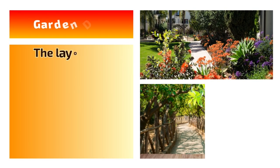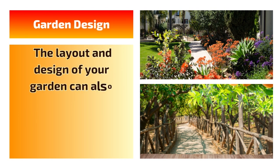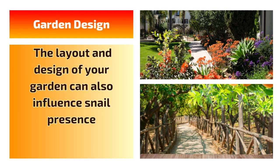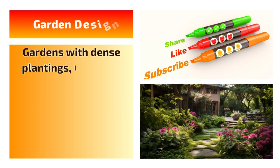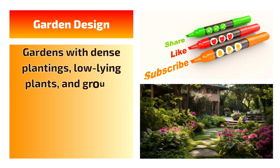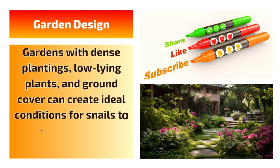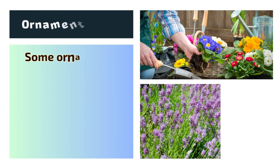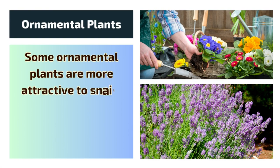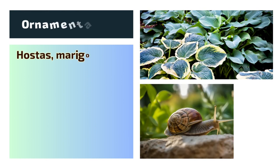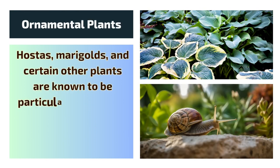6. Garden Design. The layout and design of your garden can also influence snail presence. Gardens with dense plantings, low-lying plants, and ground cover can create ideal conditions for snails to hide and feed. 7. Ornamental Plants. Some ornamental plants are more attractive to snails than others. Hostas, marigolds, and certain other plants are known to be particularly appealing to snails.